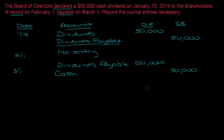And that's recording a cash dividend. Remember: you'll have an entry on the declaration date, no entry on the recording date, and an entry to reduce the payable and pay out cash on the payment date.